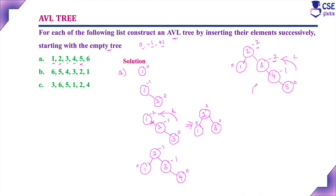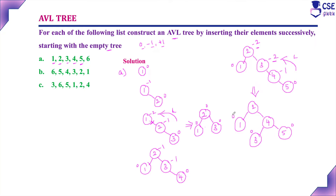Implementing a single left rotation: the tree will become 2 with 1 as left child, and implementing the left rotation on the right subtree, 4 will become the root node of that subtree. 3 will go as left child and 5 will be the right child. Now checking the balance factor: 0 for all leaf nodes, here 1 minus 1 is 0, and here 1 minus 2 is minus 1. Now the tree is balanced.